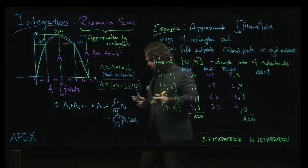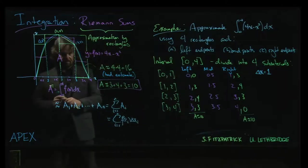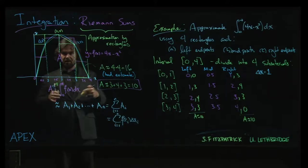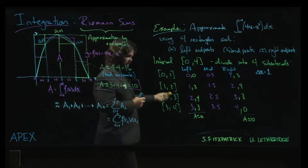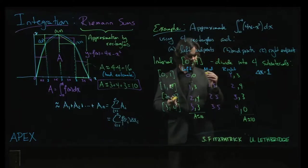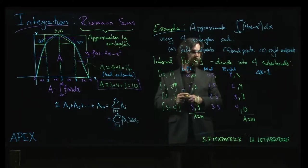It's not always going to be the case that left and right endpoints give you the same value, just that there is some obvious symmetry in this particular graph, which is why we get the same result on either end. For midpoints, we have to work a little bit harder to get the y values.